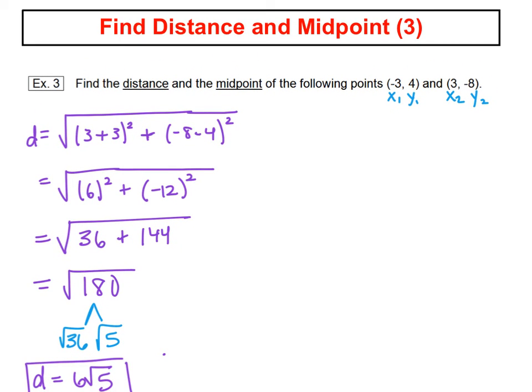Moving on to our midpoint formula. Ordered pairs: add the x's, negative 3 plus 3, divide it by 2, that gets you to the middle. Add the y's, 4 plus negative 8, divide by 2, that gets you to the middle.